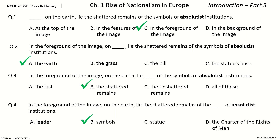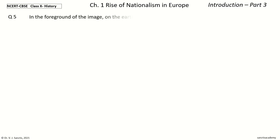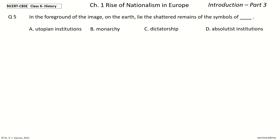Question five, the last question: In the foreground of the image, on the earth lie the shattered remains of the symbols of ___. The options are: open institutions, monarchy, dictatorship, absolutist institutions. The answer is: absolutist institutions.